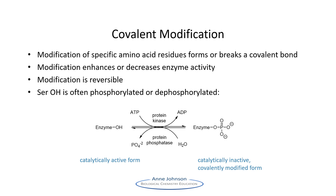In the example here, phosphorylation has changed the catalytically active form of the enzyme into a catalytically inactive form. However, this is not universally the case. Some enzymes are less active when phosphorylated and others are more active. There is usually some logic behind this. Phosphorylation is thought to change the equilibrium between the taut and relaxed conformers.